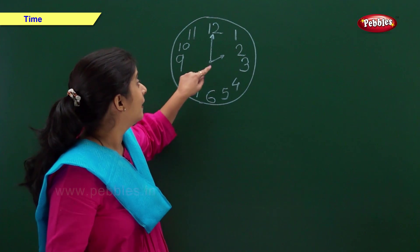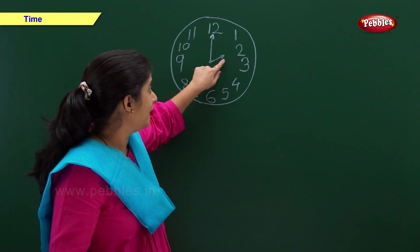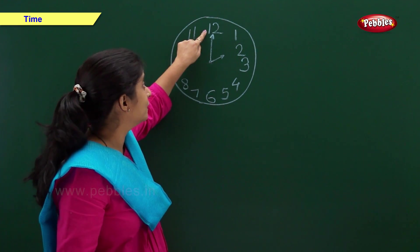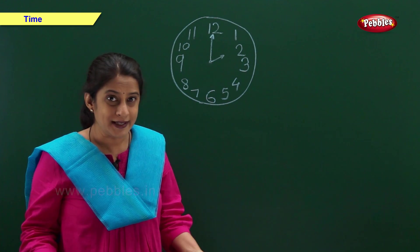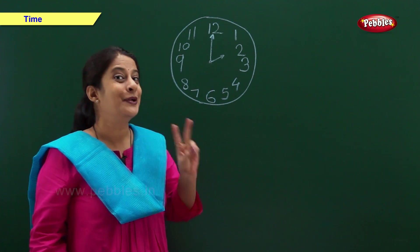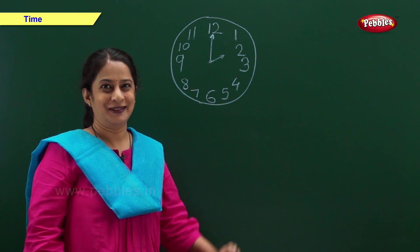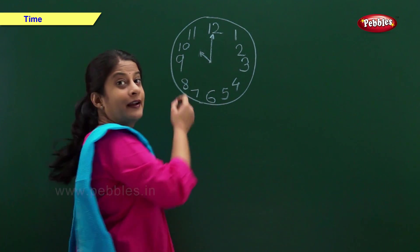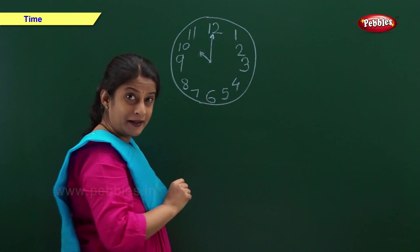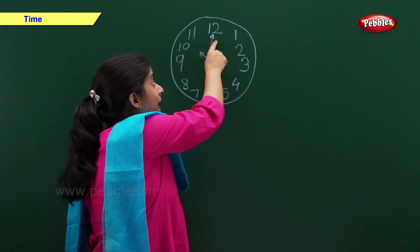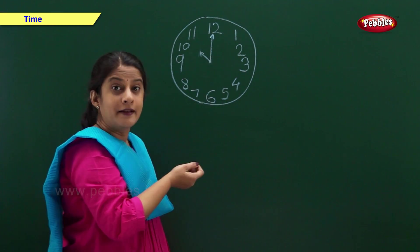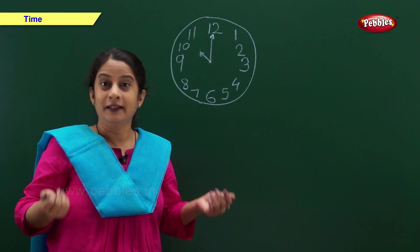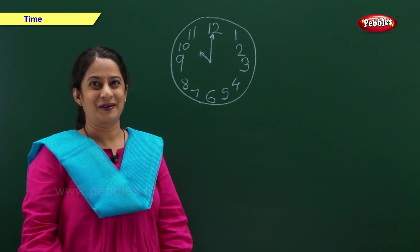Now, the hour hand is on 2 and the minute hand is on 12. So, we say the time is 2 o'clock. Now, the hour hand is on 10 and the minute hand is on 12. So, we say the time is 10 o'clock.